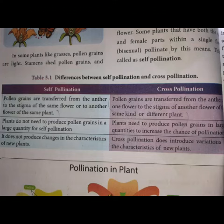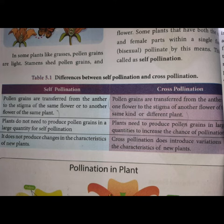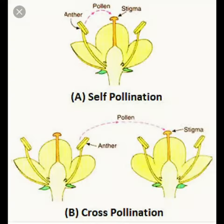There are some differences between self-pollination and cross-pollination. Plants do not need to produce pollen grains in large quantities for self-pollination, but in the case of cross-pollination they need to produce more pollen grains. Also, self-pollination does not produce changes in new plants, but in cross-pollination new plants are produced because different pollen grains are mixing.